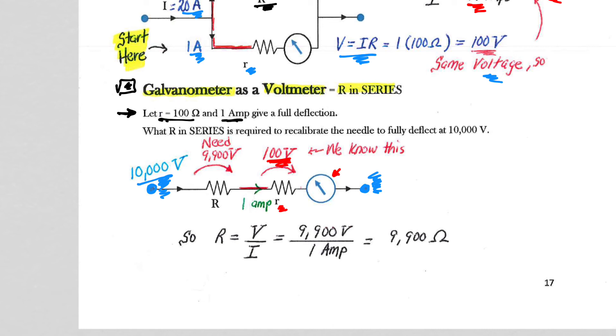I need the other 9,900 volts to be a voltage drop across the resistor that I'm going to add into the circuit. So I put the voltage that I'm going to need to drop across that resistor into my Ohm's law calculation. It will still be a 1 amp current that gives me my full-scale deflection, so I put in the 1 amp, and I get a 9,900 ohm resistor in this case.